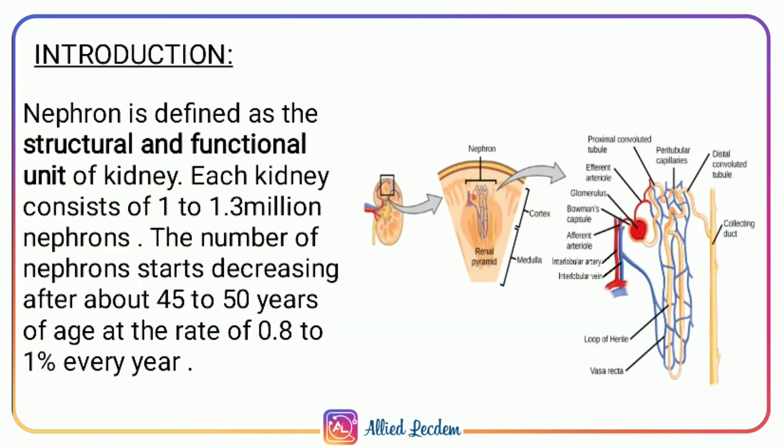Nephrons are the structural and functional unit of the kidney. Each kidney contains 1 million nephrons. The number of nephrons starts decreasing after the age of 45 years.